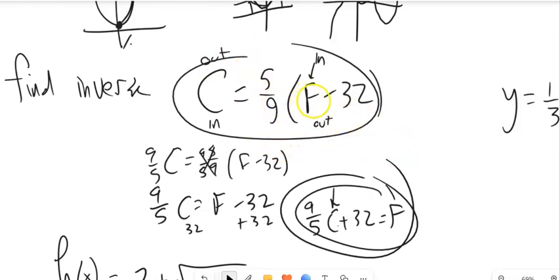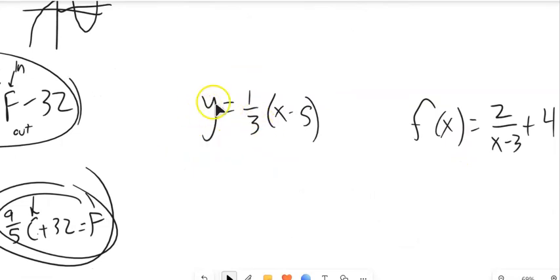Now, it was nice when I had f and c and I knew that they had some meaning. Let's say I have a function like this, y equals one third x minus 5. And x is always my input, y is always my output. So if I want to find the inverse of this, I'm literally going to switch the inputs and the outputs. So I'm going to rewrite this as x equals one third y minus 5.